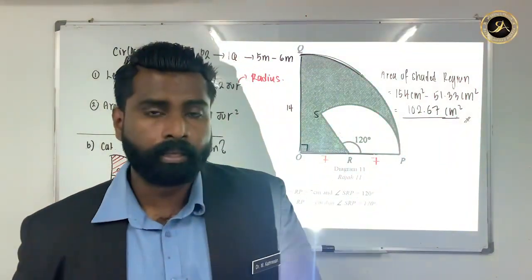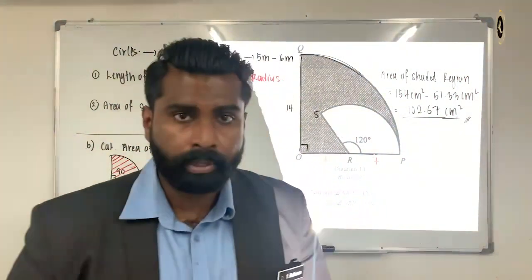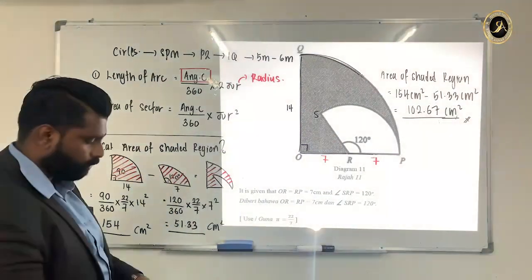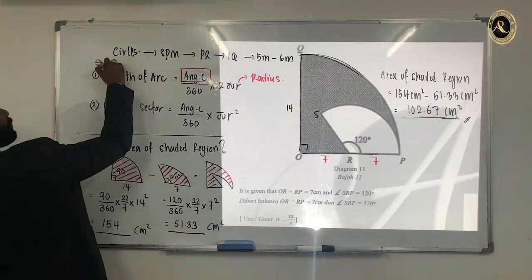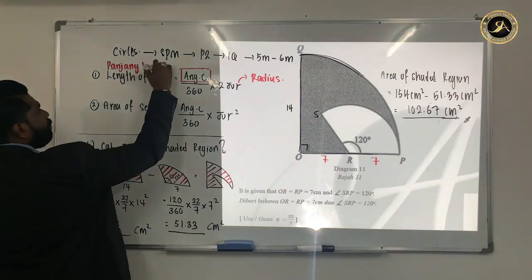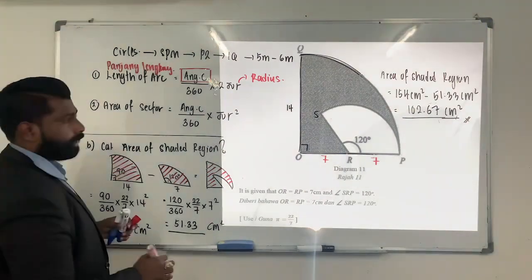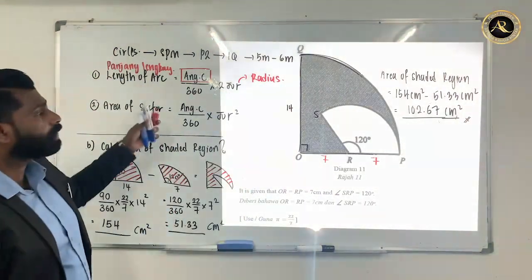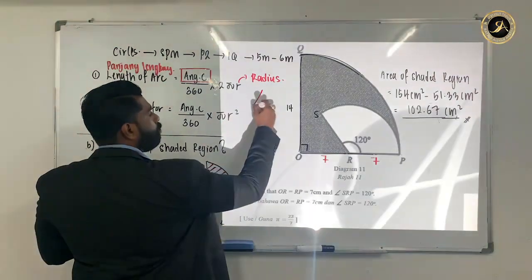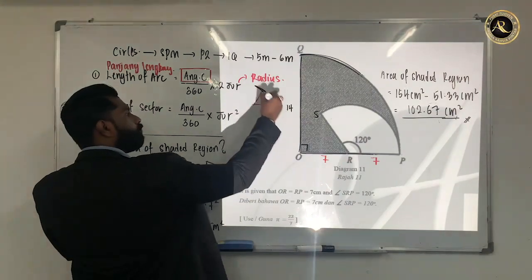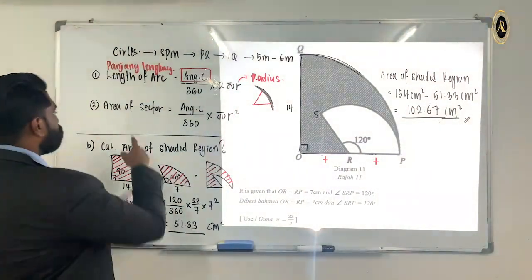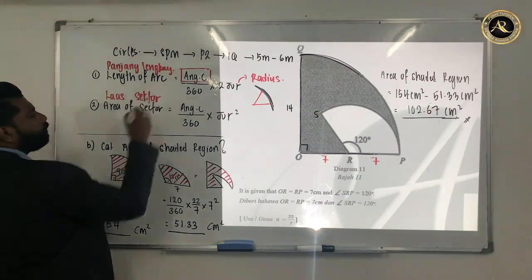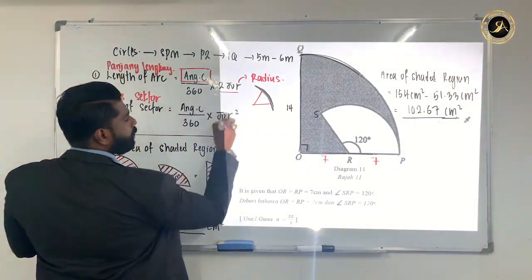To summarize this chapter, you must know two main formulas. Formula 1: length of arc ('panjang lengkung') = angle at center ÷ 360 × 2πr. Formula 2: area of sector ('luas sektor') = angle at center ÷ 360 × πr². Make sure you use 2πr for length and πr² for area. We are done with Circles for now — I will see you in Part 2 for a different quiz. Thank you very much.